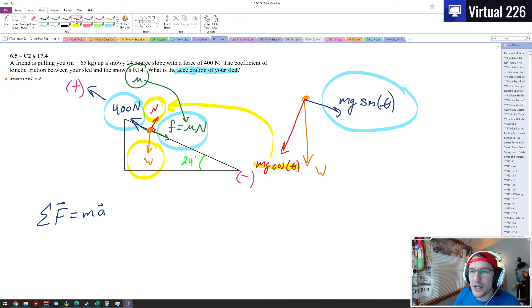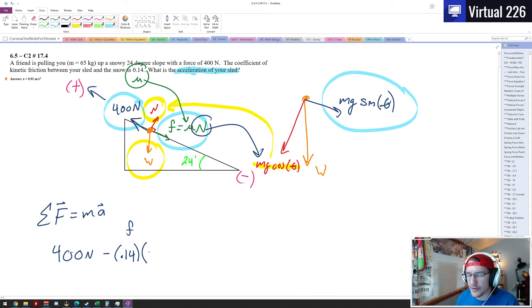So let's set up this equation here for our sum of the forces. The 400 is positive because it's going up the plane. Then there's minus the friction, so minus friction which is mu times n. We know mu is 0.14 here, and we know the normal force, that normal force is the mg cosine theta. So mg, that's 65 kilograms, your mass, times gravity 9.8 times cosine of theta, so cosine of 24.